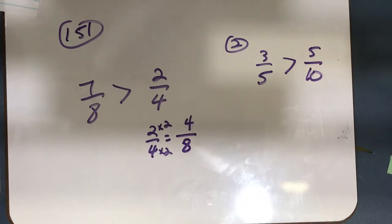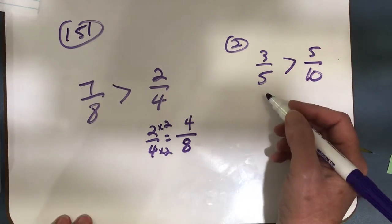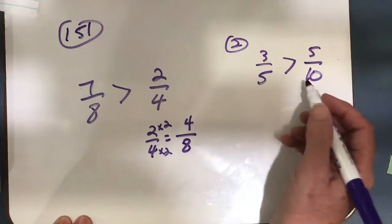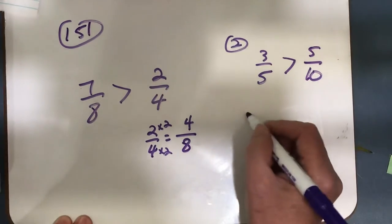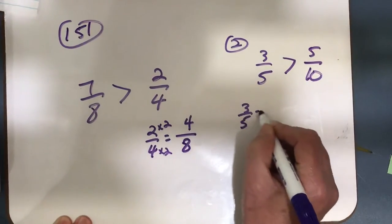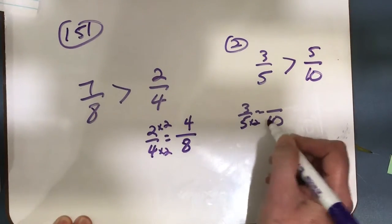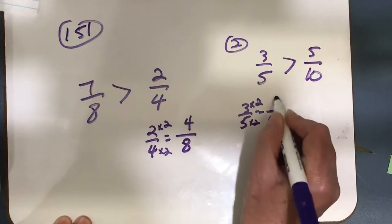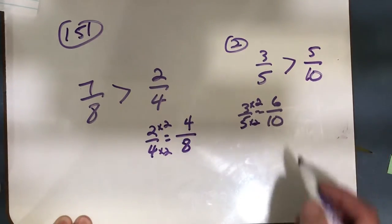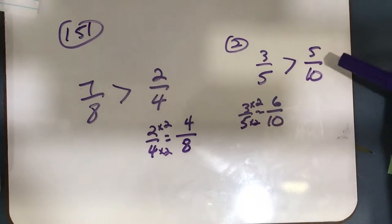Because now we just have to compare my numerators. The same thing over on number 2, 3 fifths compared to 5 tenths. I can change 3 fifths into tenths, make an equivalent fraction. 5 times 2 equals 10, so 3 times 2 equals 6, and 6 tenths is greater than 5 tenths.